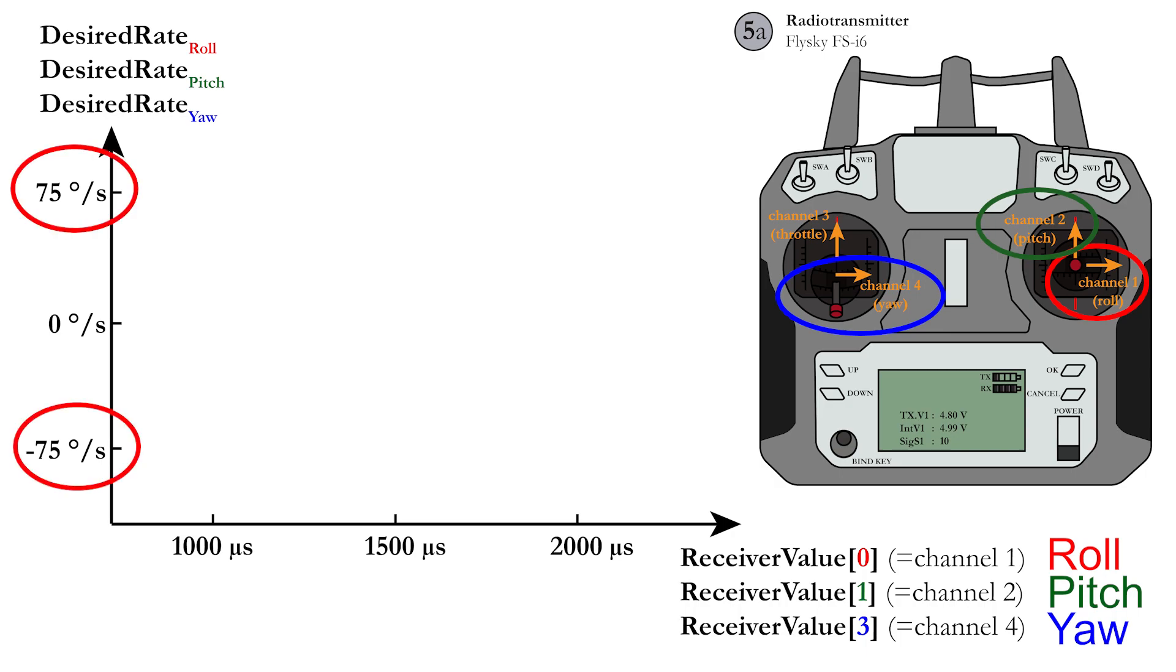For now, take the limit values of 75 degrees per second and minus 75 degrees per second. The transformation from the PWM to rotation rates is then visualized by the line on the screen, together with the corresponding linear correlation.